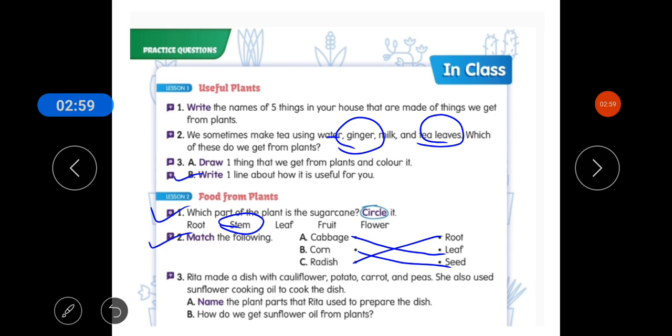Third question is Ria made a dish with cauliflower, potato, carrot and peas. She also used sunflower cooking oil to cook the dish. So what do you have to do in this part? Name the plant parts that Ria used to prepare the dish.